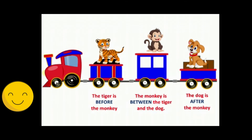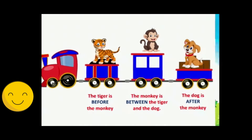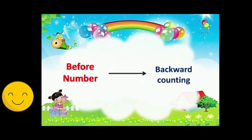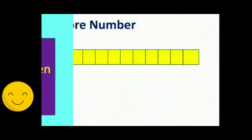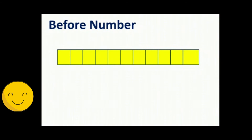Let's do before number, children. Before number means backward counting. When we count backward from a given number, we get the number before. Look at the number. Before number means backward counting.